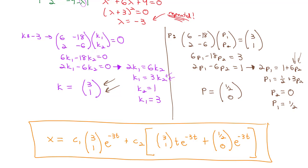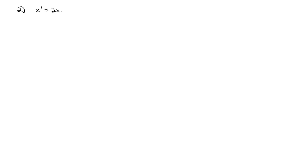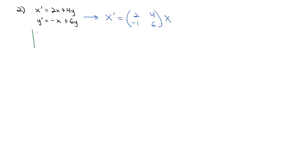Let's try one more example. We have x prime equals 2x plus 4y, and y prime equals negative x plus 6y. Again we convert to matrix form: X prime equals [2, 4; -1, 6] times the solution matrix. Then we find the eigenvalues using the determinant: (2 minus lambda)(6 minus lambda) minus (negative 1)(4), which becomes (2 minus lambda)(6 minus lambda) plus 4 equals zero.